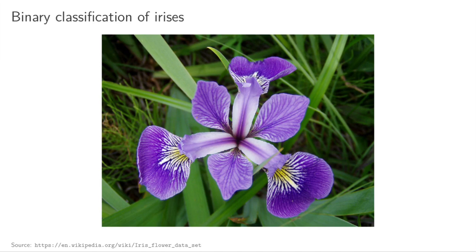An iris has a petal — the side leaf — with a width and a length, and then a bigger leaf called the sepal, which also has a length and a width. If you plot these length and width measurements, we can try to determine what type of iris something is based on its petal length and width as the two input features.